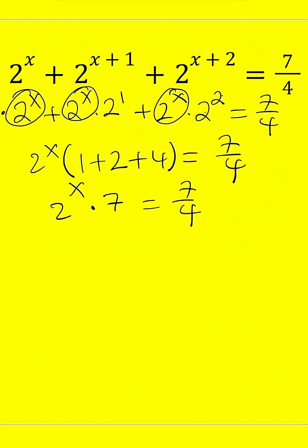We can go ahead and multiply both sides by 1 over 7, or divide both sides by 7, which means the 7s are going to cancel out, leaving us with 2 to the power x equals 1 fourth.